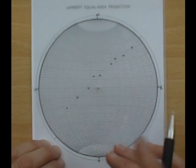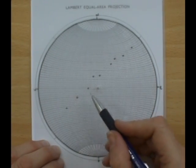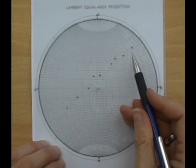Interpreting Fold Data. Here we have a series of bedding readings plotted as poles.